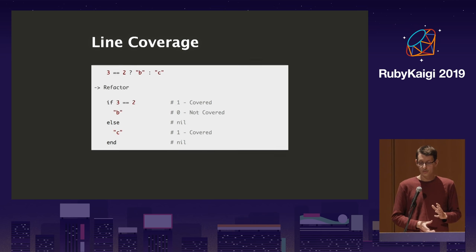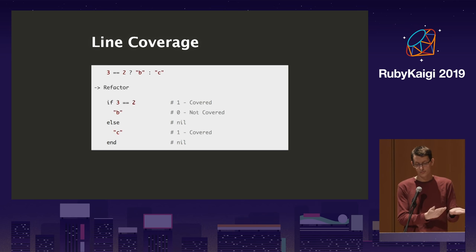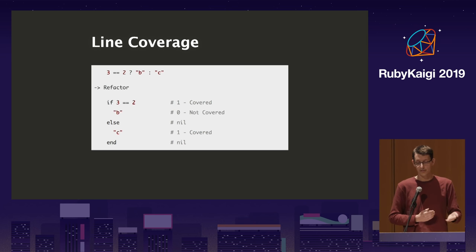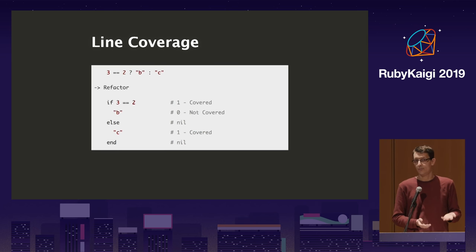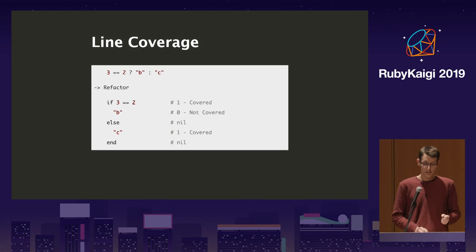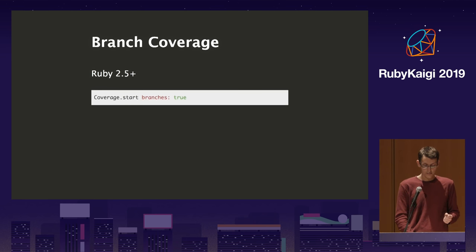You could approach this by refactoring your code — not using two things on one line, splitting everything up. You could make a RuboCop rule that refactors your code automatically, but there's a better tool called branch coverage, which is available in Ruby 2.5.